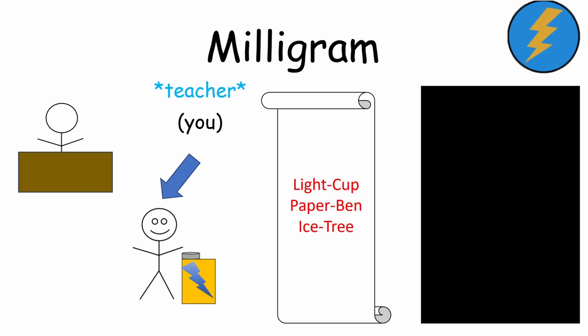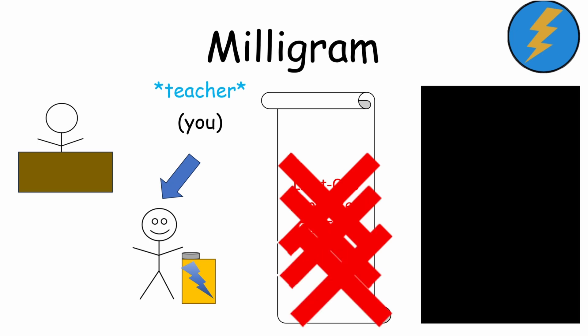As you keep reading off the word pairs, again, the learner makes a mistake. You press the shock button again. Now it's 30 volts. And another mistake, and then another. You keep pressing the shock button.